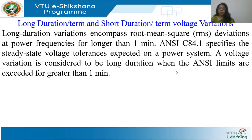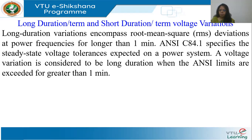The ANSI C84.1 specifies the tolerance we expect from a power system. The utility cannot guarantee a constant voltage all the time because the power system is very dynamic. A utility cannot tell an industry it will supply exactly 66 kV, nor can an end consumer expect exactly 231 volts at 50 Hz all the time.